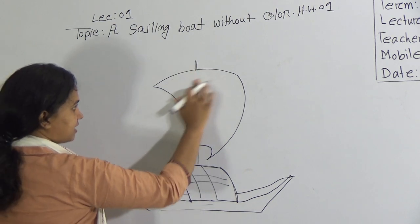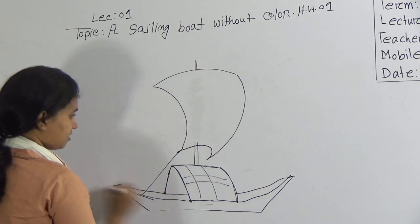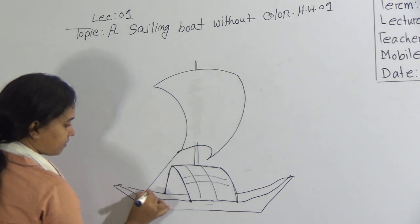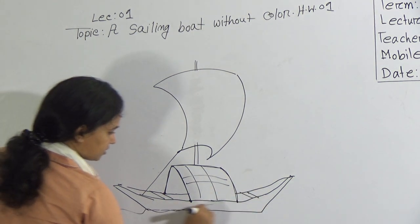And after that you will erase this line also and give a thread. Give this type of line and give the watershed like this.